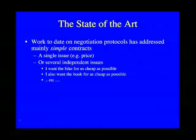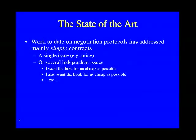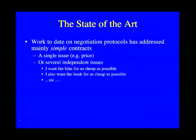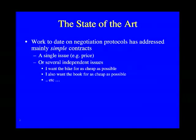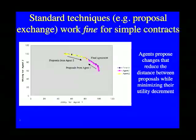The state-of-the-art in negotiation protocols has been to address almost exclusively simple contracts — contracts which either include just a single issue, for example price, or several independent issues, each relating to the price of a separate item. For example, I want the bike for as cheap as possible, I also want the book for as cheap as possible, and so on. Standard techniques, such as proposal exchange, work fine for simple contracts.